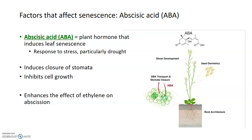ABA is another plant hormone that induces leaf senescence. It's usually expressed in response to stress, particularly drought stress. ABA has several different functions: it closes stomata to reduce water loss, which is great for stressful drought times; it increases seed dormancy so seeds don't germinate in the absence of water; and it inhibits cell growth during times of drought and stress. In addition, in relation to senescence, ABA enhances the effects that ethylene has on abscission — it basically amplifies the ability of ethylene to regularly cut and remove leaves from the stem.